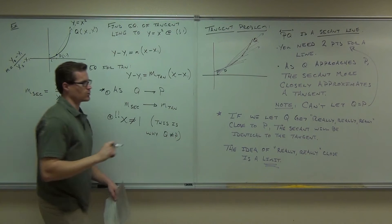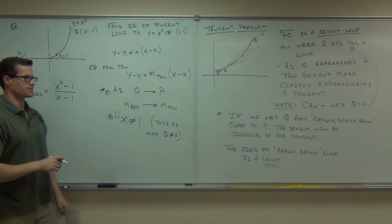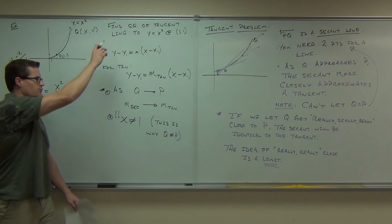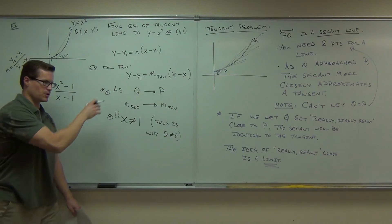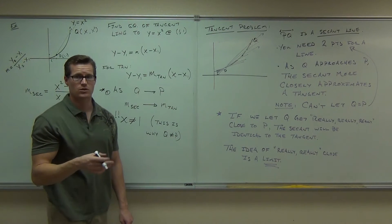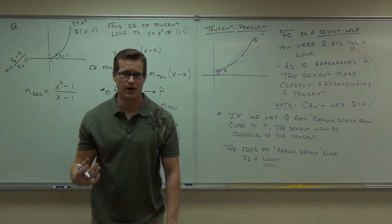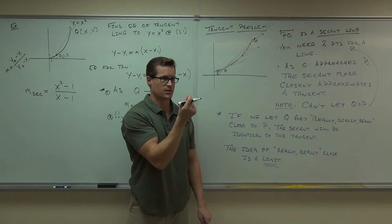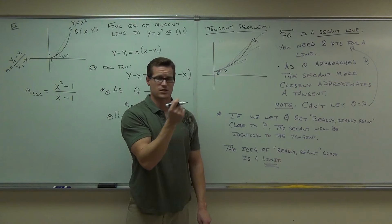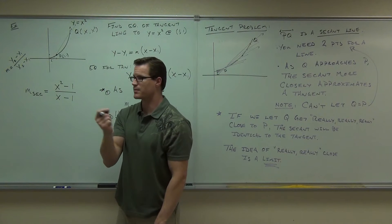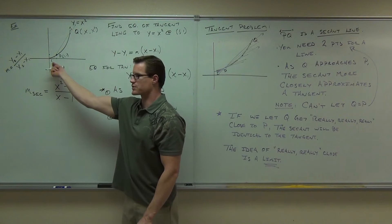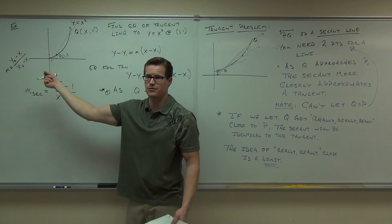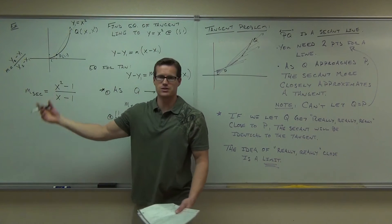This is why q can't equal p. If it does, if you try to find the slope of the secant at that point — move q all the way down and then plug in the x-coordinate — if it's the same thing, you're going to get something that's undefined, because you're trying to find the difference between points that don't exist, a difference that doesn't exist. That's going to be dividing by zero. There's no difference in the x-axis, so that would mean you're dividing by zero. You get an undefined slope.